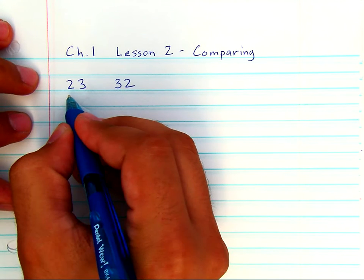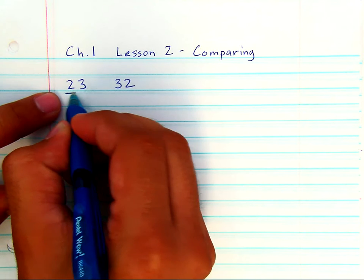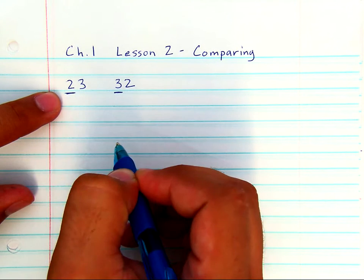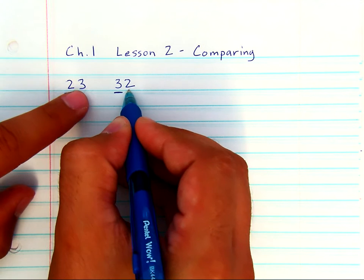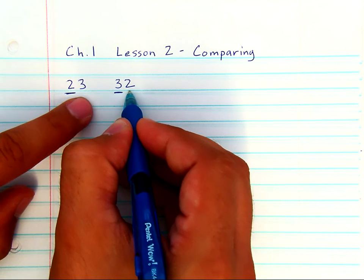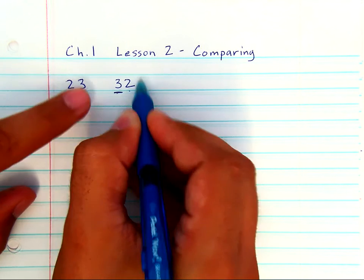And hopefully, in second grade, you start by comparing the tens place first. Because if you start with the tens place, you know that no matter how many ones the number has, the tens is always going to determine which amount is more.